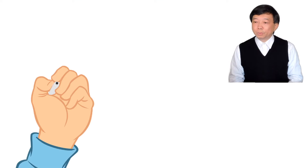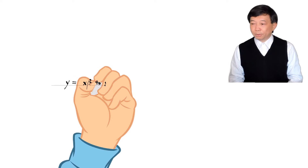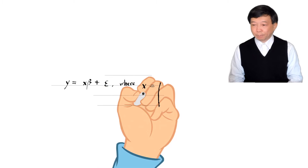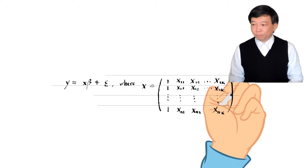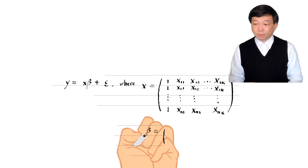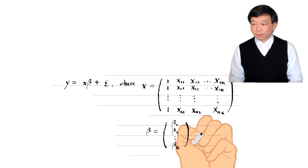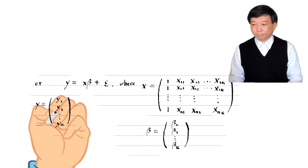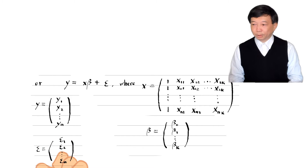Suppose we have a linear regression model: y equals x multiplied by beta plus epsilon. Here, y is the outcome variable vector, x is the explanatory variable matrix, beta is the population parameter vector, and epsilon is the error term vector. The model is written in matrix form.